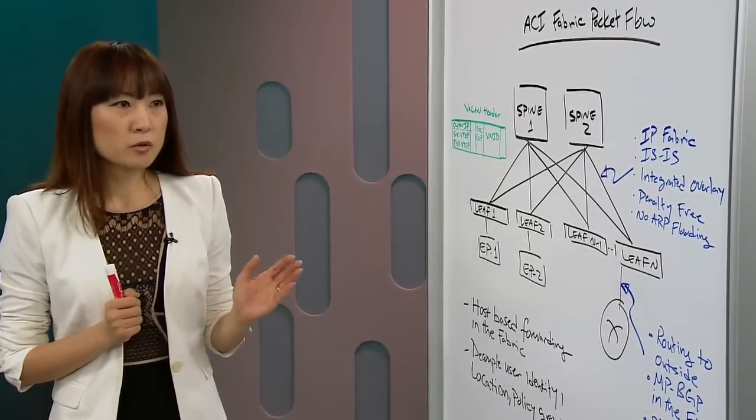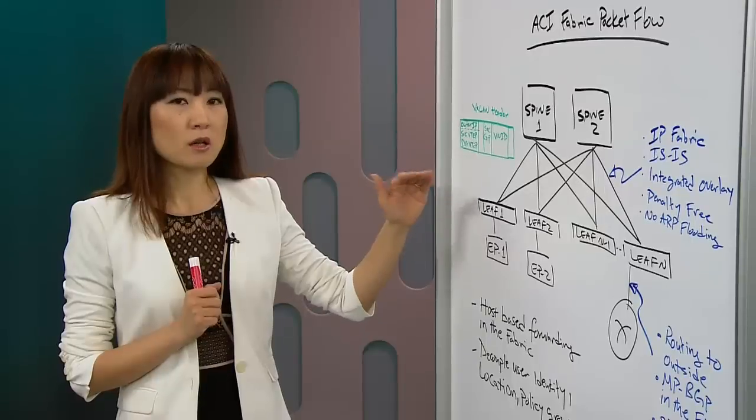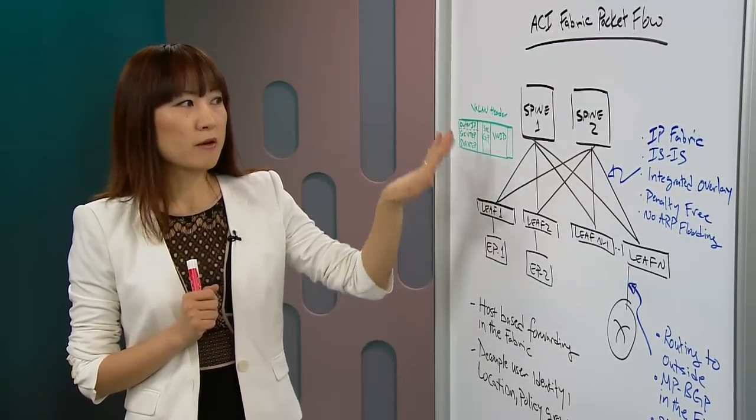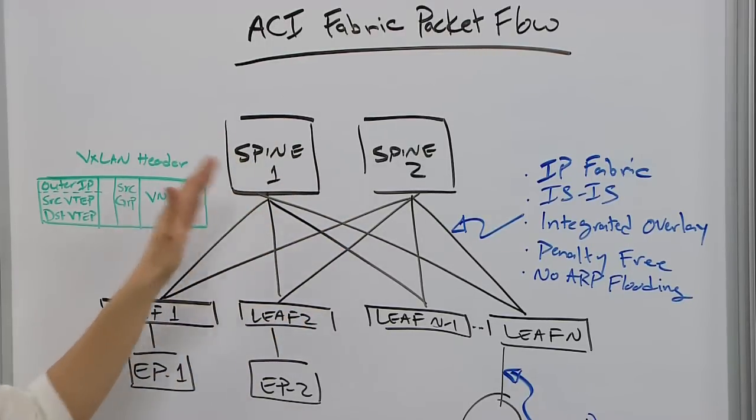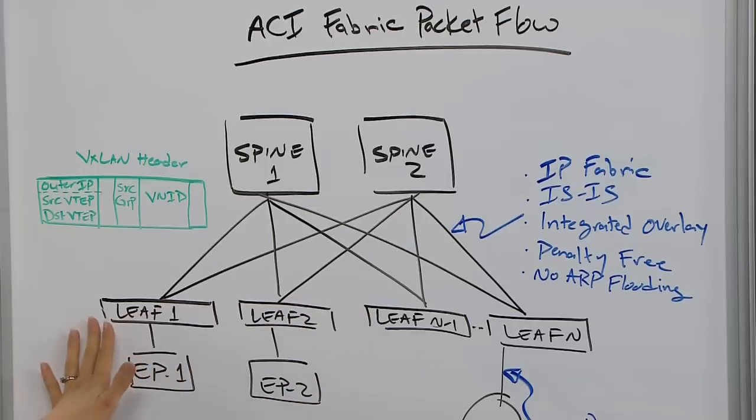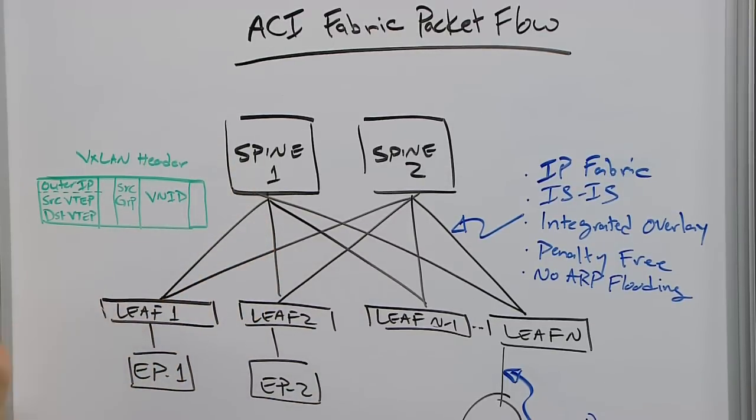First, I'm going to have an overview of ACI Fabric. We're building a two-layer cloud topology. We have spine layer and leaf layer. And we're building an IP Fabric using IS-IS as the internal routing protocol to establish IP connectivity throughout the Fabric among all the nodes, including spine nodes and leaf nodes.